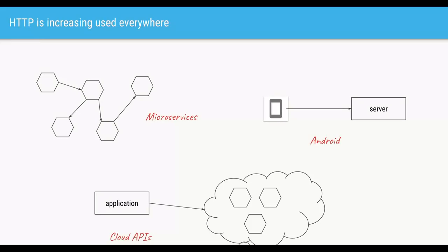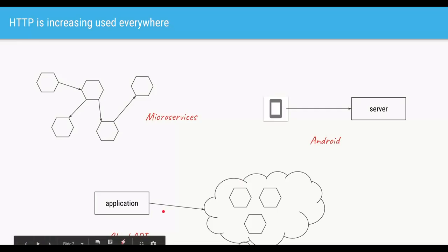Nowadays it's common to make HTTP calls from within your Java code. If your architecture is based on microservices, one service can call another using HTTP. If you're creating an Android application, you might want to use HTTP to call the server to get or save data. Or maybe you're using one of the cloud APIs which are increasingly HTTP-enabled — in that case, you might want to use HTTP to reach out to those cloud APIs. You can make all these calls using Retrofit.